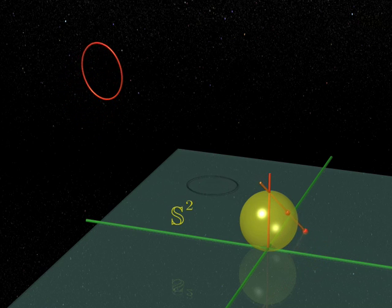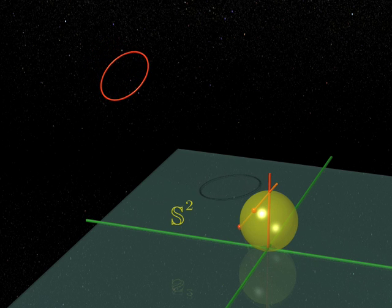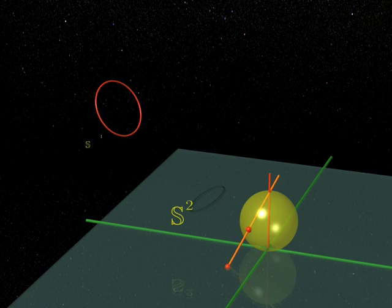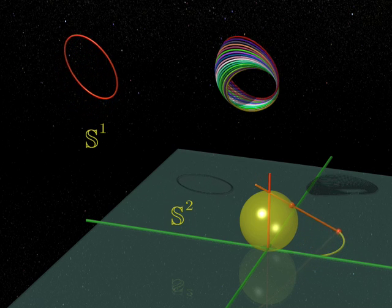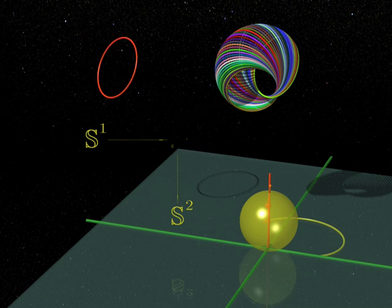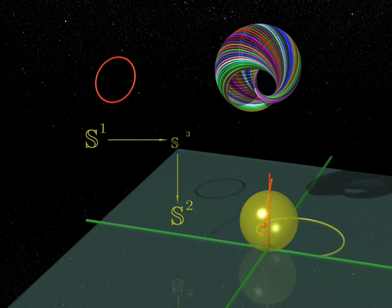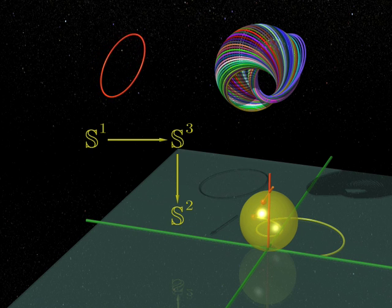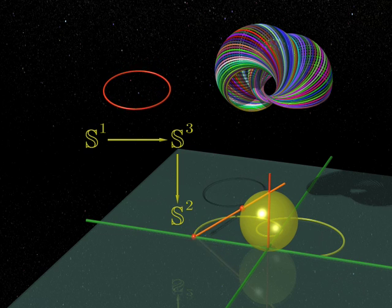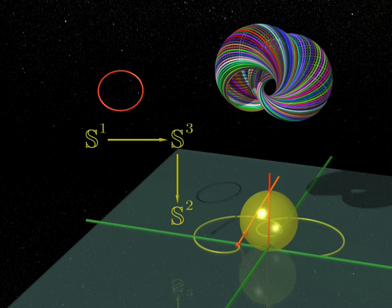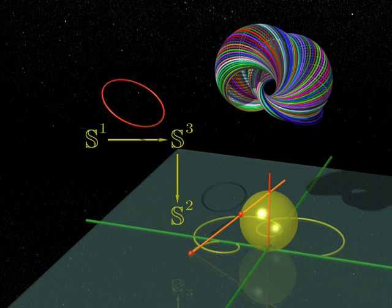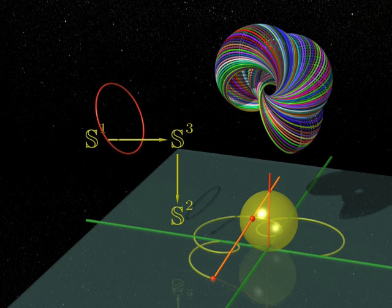So, we have a circle for each point on the two-sphere. But a circle is a one-dimensional sphere, isn't it? All these circles fill up the three-sphere. Each point on the three-sphere belongs to a single circle, and therefore defines a point on the two-sphere. In this way, we get a projection from the three-sphere to the two-sphere. Complicated, isn't it?